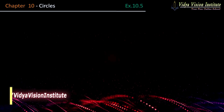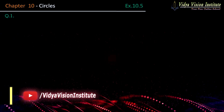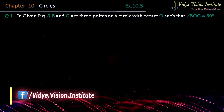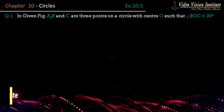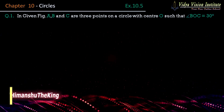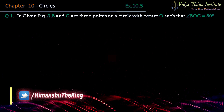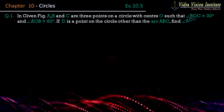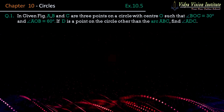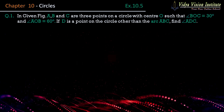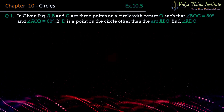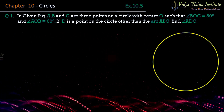Toh chaliye dosto, Exercise 10.5 shuru karte hain, jisme Question No. 1 hai: In the given figure, A, B and C are three points on a circle with centre O, such that angle BOC is equal to 30 degrees and angle AOB is equal to 60 degrees. If D is a point on the circle other than the arc ABC, find angle ADC.